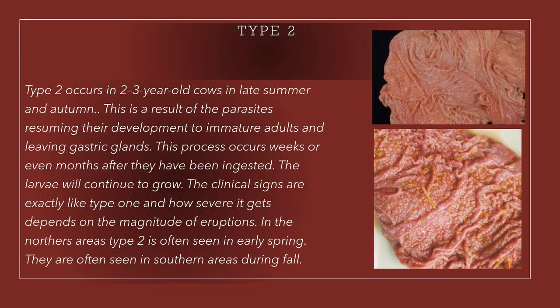Now let's talk about the actual type 2, which is the most severe. Type 2 occurs in two to three-year-old cows in late summer and autumn. It is a result of the parasites resuming their development to immature adults and leaving the gastric glands. This process occurs weeks or even months after they have been ingested. The clinical signs are exactly like type 1, and severity depends on the magnitude of eruptions. In northern areas, type 2 is often seen in early spring; in southern areas, they are seen during fall.